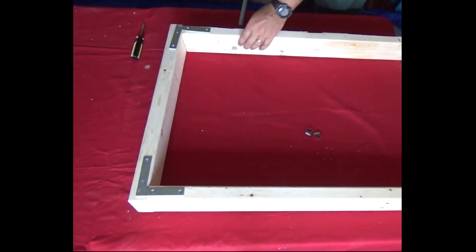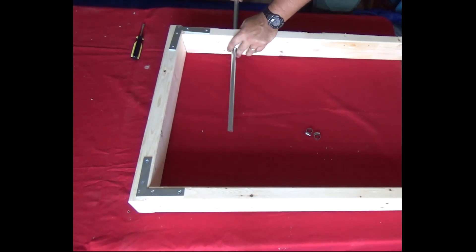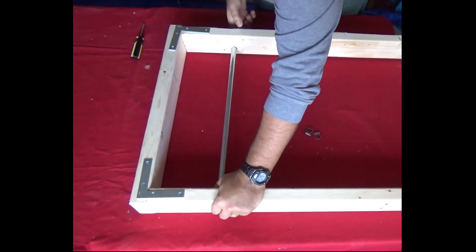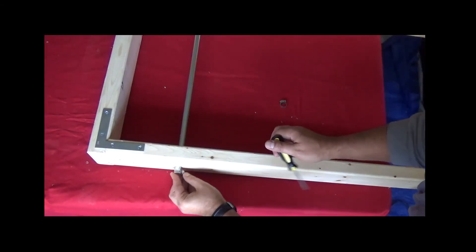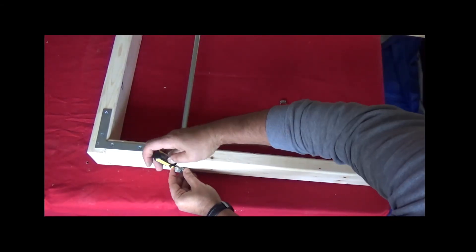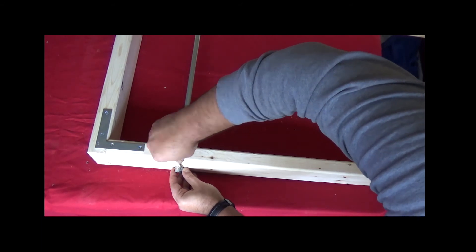Now we'll add the longer metal rod. Make sure to leave an even amount on either side. Use the 2 metal washers to keep the rod from sliding from side to side.